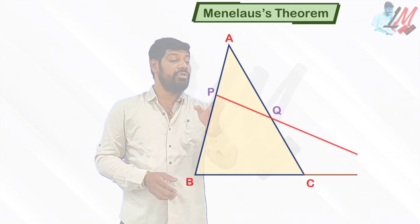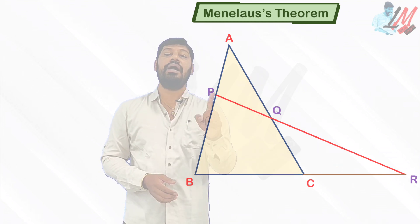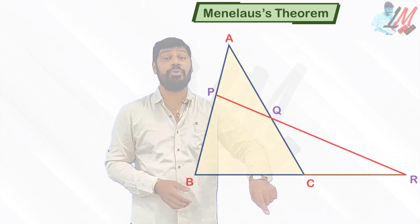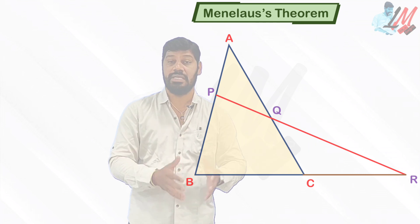For example, if you draw a line PQR something like this which divides AB at P, AC at Q, and BC produced at R. So then PQR will be considered as transversal.